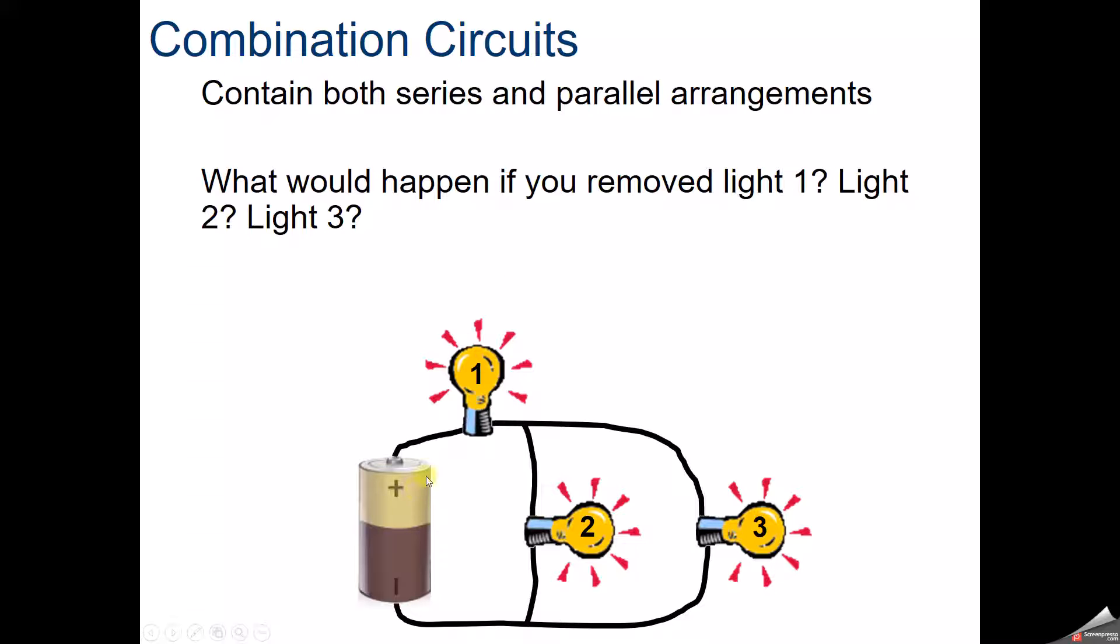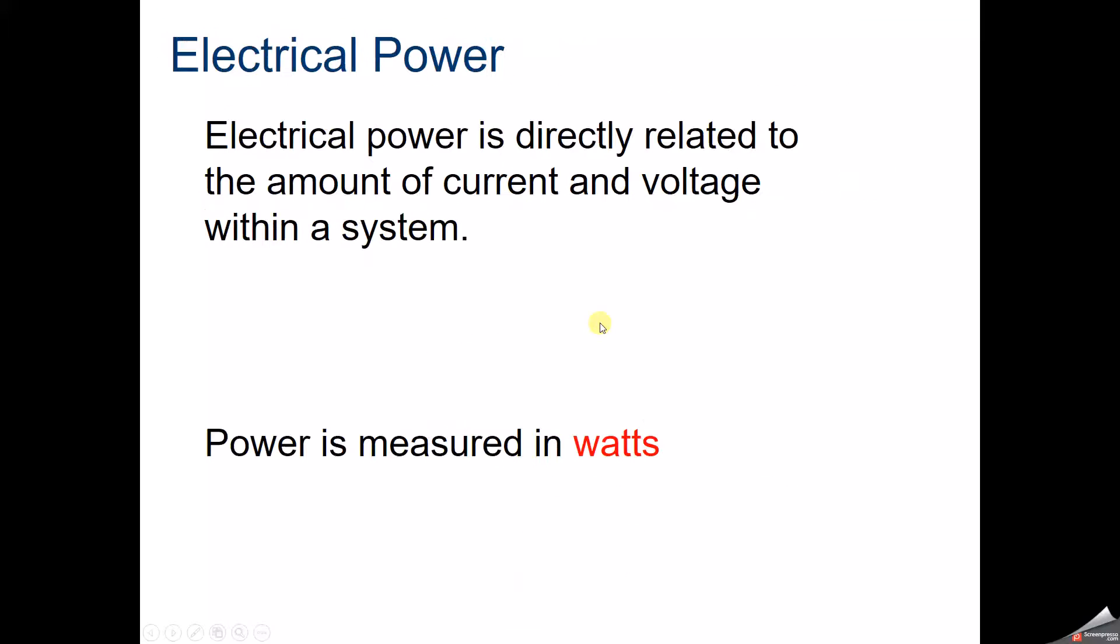So in a combination circuit, what would happen if we remove light one? Well, there would be no complete circuit to do anything, so the whole system would shut off. How about two? You remove two, you've got that outside loop. You remove three, you've got that inside loop, so things will still work.